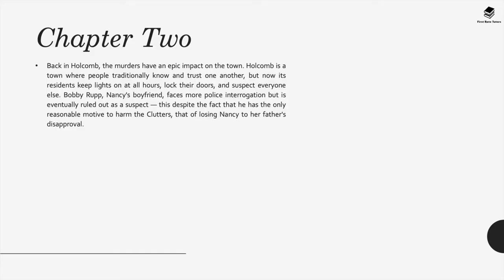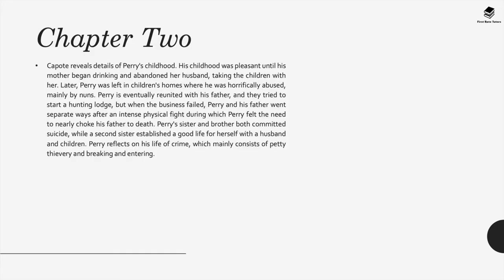Bobby Rupp, Nancy's boyfriend, faces police interrogation but is eventually ruled out as a suspect, despite having the only reasonable motive — his relationship with Nancy against her father's disapproval. Capote then reveals details of Perry's childhood: his mother began drinking and abandoned her husband, taking the children with her. Later Perry was left in children's homes where he was horrifically abused, mainly by nuns. Perry is eventually reunited with his father and they tried to start a hunting lodge, but when the business failed, Perry and his father went separate ways after an intense physical fight during which Perry felt the need to nearly choke his father to death.